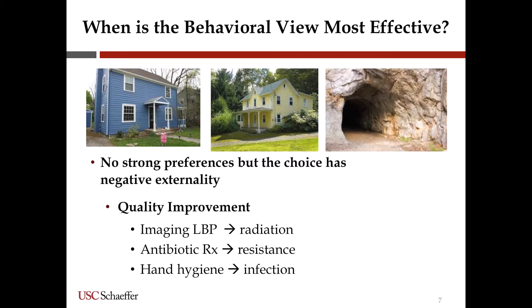For example, I can use behavioral economics to nudge you to choose a yellow house over a blue house by framing things a certain way, but it would be impossible to use behavioral economics to have you choose living in a cave over a yellow house. That's how we have to think about applying this to medicine — where do we have situations where there's not a big difference or strong preference, but there's a really serious negative consumption externality?